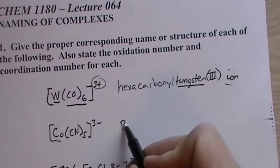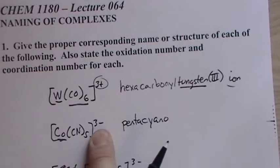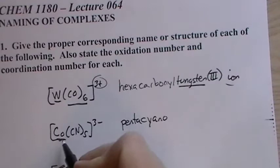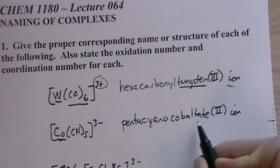So first we name the ligands, and it's 5, so we call it pentacyano. Again, there's only one type of ligand here, so nice and easy. Pentacyano, now this is cobalt. If this was a plus 3, then we call it cobalt, just cobalt(III). But because it's part of an anion, we call it cobaltate, and this is minus 5, so this would be cobaltate(II) ion.